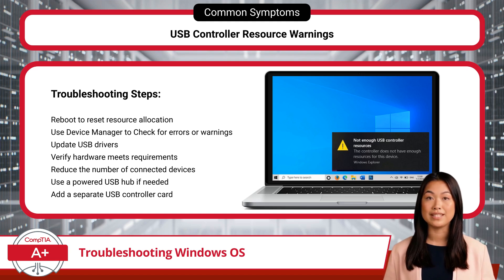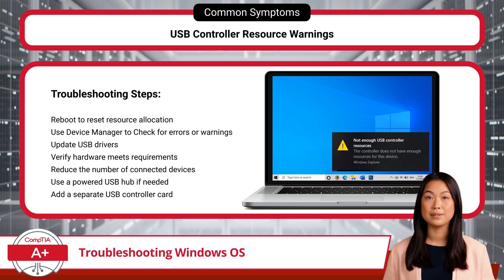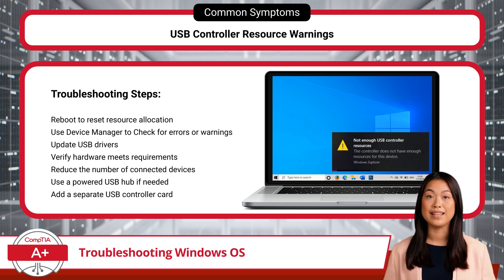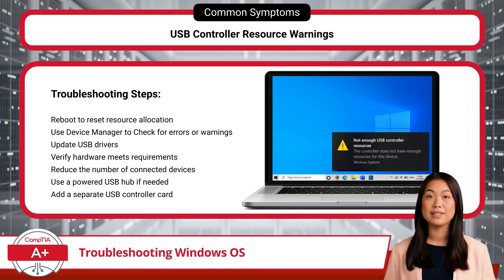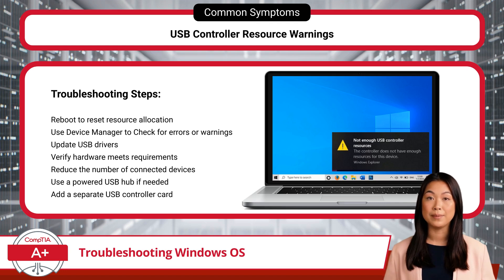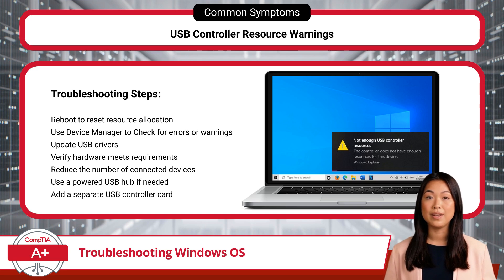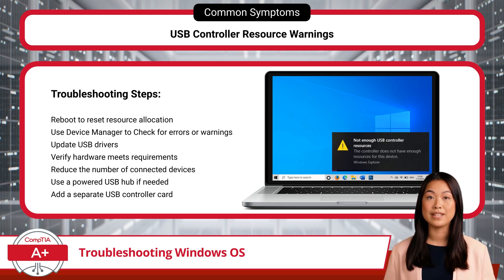Next, check whether the system's hardware meets the requirements for the connected USB devices, as older systems may struggle to handle multiple or high-demand USB devices. In such cases, try to reduce the number of connected devices to see if performance improves. Using an unpowered USB hub can also contribute to resource conflicts, so consider switching to a powered USB hub, which provides its own power supply and can better handle multiple devices. If the issue persists, consider adding a separate USB controller card to the system to provide additional USB ports and resources.